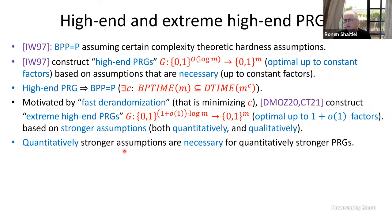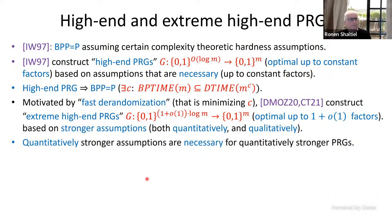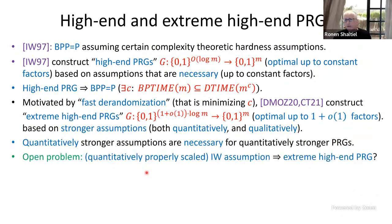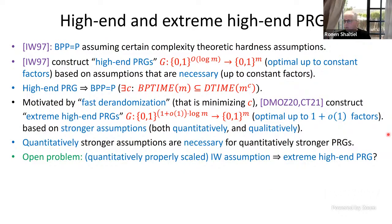Qualitatively stronger assumptions are in some sense necessary because we want quantitatively stronger pseudo-random generators with better stretch. But it's not at all clear that we need qualitatively stronger assumptions. The open problem we want to consider is whether we can get extreme high-end pseudo-random generators based on the Impagliazzo-Wigderson assumption without changing it qualitatively — only quantitatively scaling it.